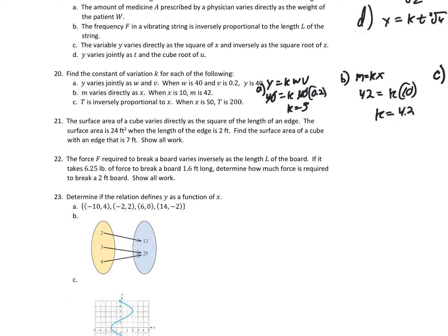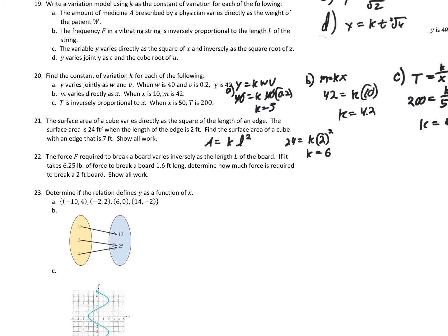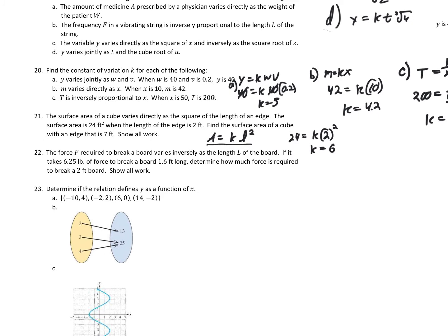For number 21, the surface area of a cube varies directly as the square of the length of the edge, so A equals K times L squared. We're told the surface area is 24 square feet when the edge is 2 feet. Plugging in: 24 equals K times 2 squared, which is 4. So K equals 6. Now to find the surface area when the edge is 7 feet: A equals 6 times 7 squared equals 6 times 49, giving an area of 294 square feet.